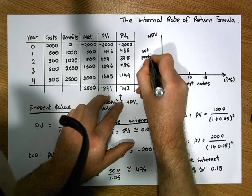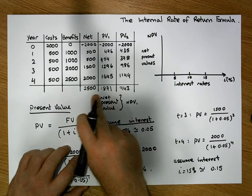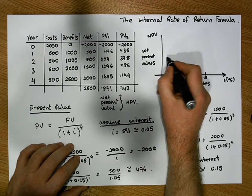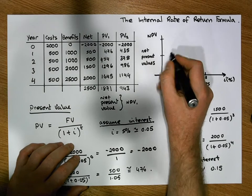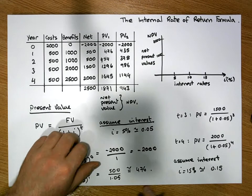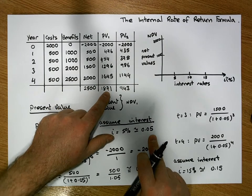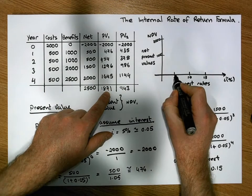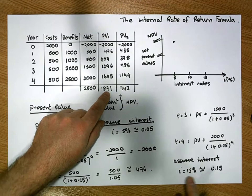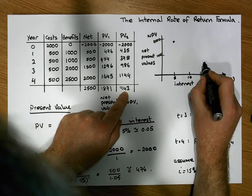The net present values go from 943 to 1,871, so let's mark 1,000 and 2,000 on the vertical axis. When interest rates are 5%, the net present value for the project is 1,871 — plotted up here. When the interest rate is 15%, the net present value is 943 — plotted here.